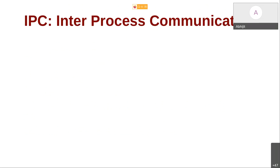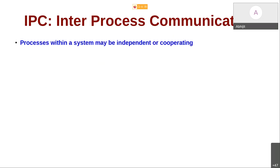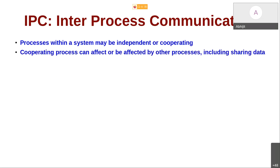Before we begin discussion on IPC — inter-process communication — let us try to understand the need for it. When we talk about processes on a system, they can be either independent or cooperating. Independent processes run on their own and don't need to communicate with any other process. Cooperating processes are those which can affect or be affected by other processes, including sharing of data.